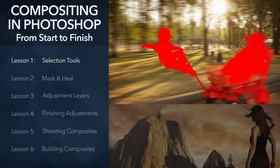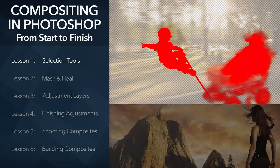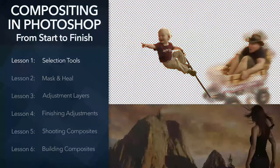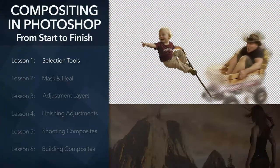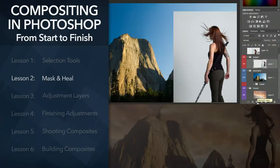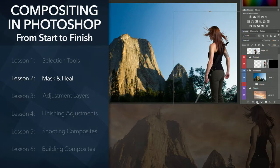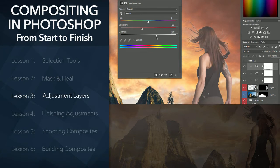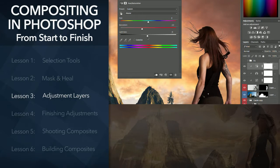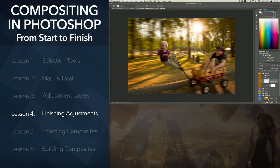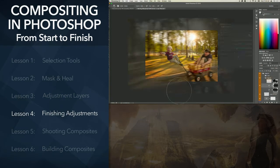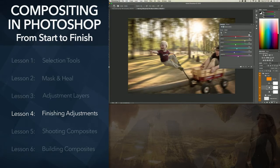We'll start the class by learning how to make perfect selections — the foundation skill for great compositing. Next you'll unlock the true power of Photoshop by turning selections into masks and fine-tuning your layers. Then you'll see how to make targeted edits to your layers, and finally global edits to bring all the elements in your composite together seamlessly.